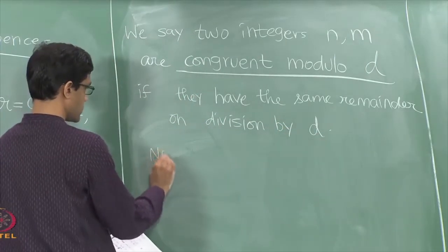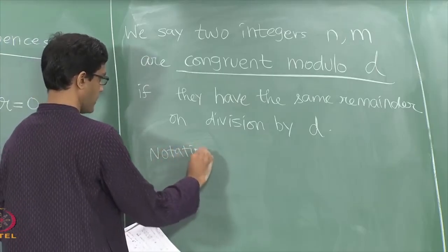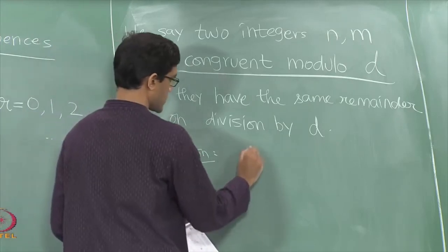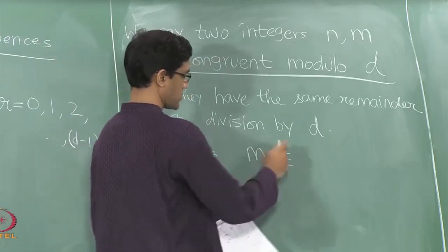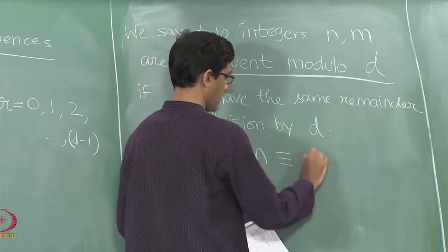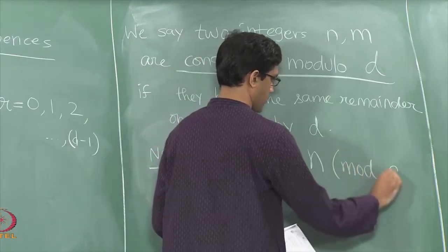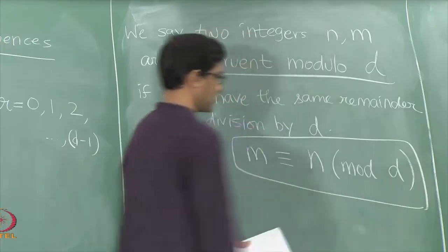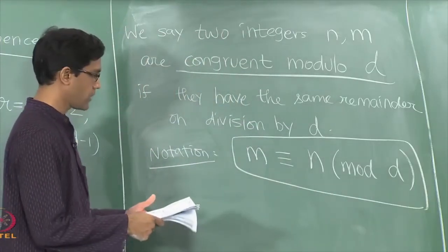Here is the notation for this, which is very useful. If m and n are congruent modulo d, we write this as m is congruent to n mod d. That is how we denote this relation of being congruent.